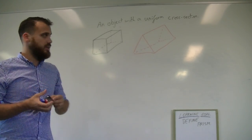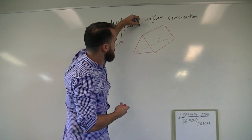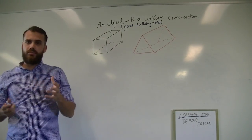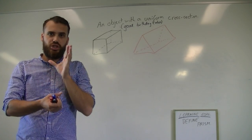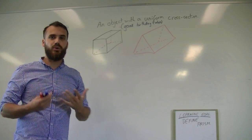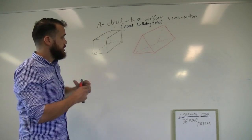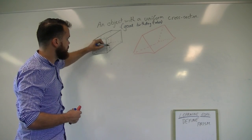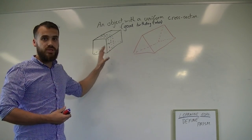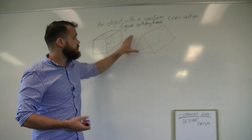Probably the easiest way to think about it is that they make good birthday cakes. What do I mean by that? I mean that they're really easy to share. For instance, if this was someone's birthday cake and you wanted to share it in equal portions, probably the easiest way to do it would be to take your knife and cut it this way. One person would get a slice like this, another like this, another like this — and they all get the same sized slice, each with a square piece sitting on a plate.